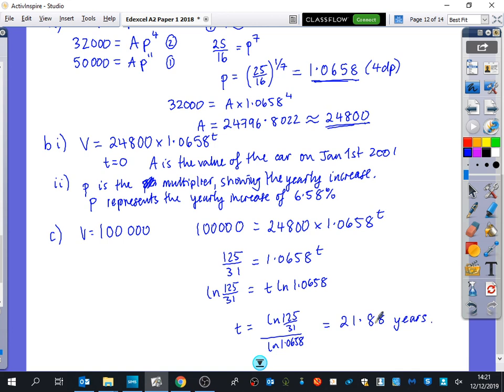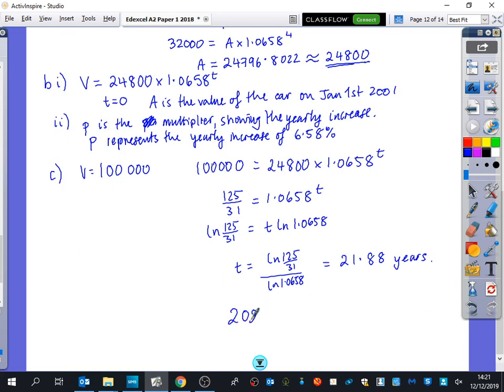So T is equal to the ln of 125 over 31 divided by the ln of 1.0658. So let's do the ln of that on my calculator divided by the ln of 1.0658. And we get that T is 21.88 years. Now, this is where people made some mistakes. This is saying at the end of the 21st year, it will exceed 100,000. So lots of people said the year will be 2022. They rounded this to 22. But because it's happening at the end of the 21st year, the year that it would actually happen in would probably be in one of those final months. It would probably be happening at the end of the 10th month, at the end of October in 2021. So the year it happens in is 2021.